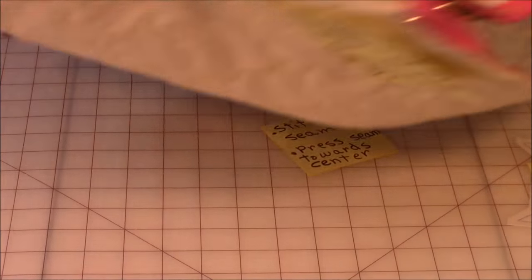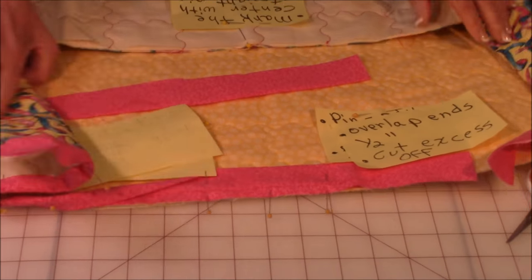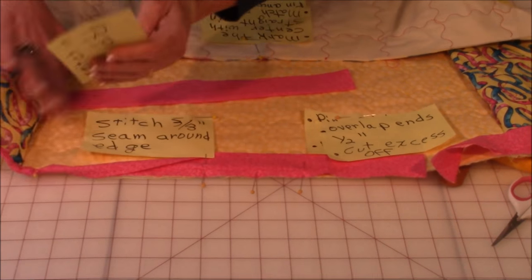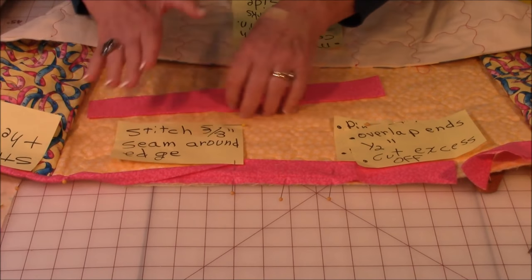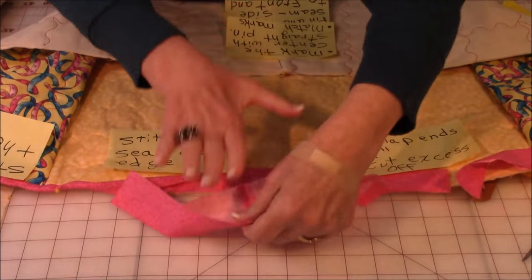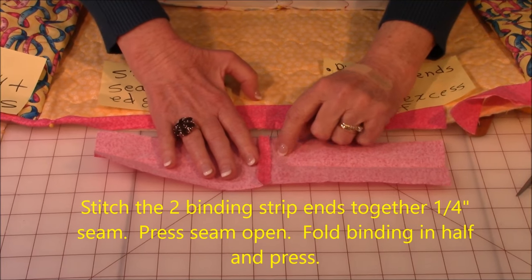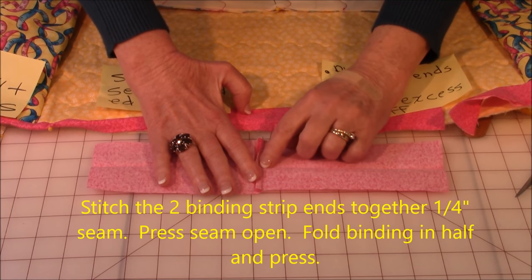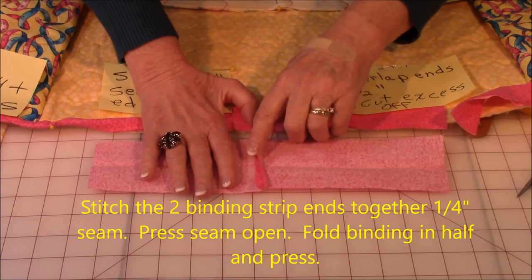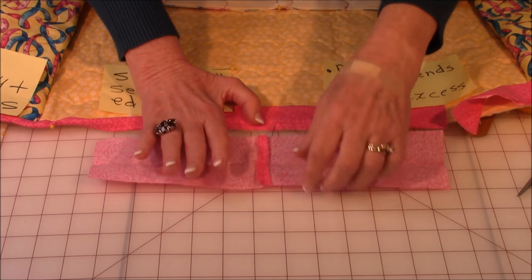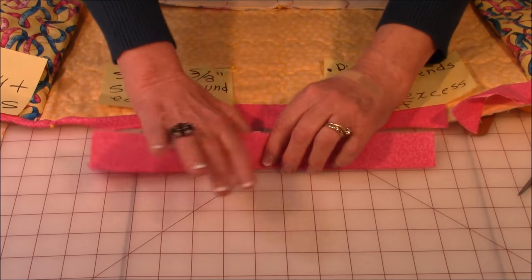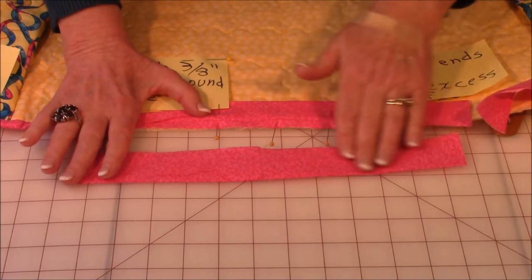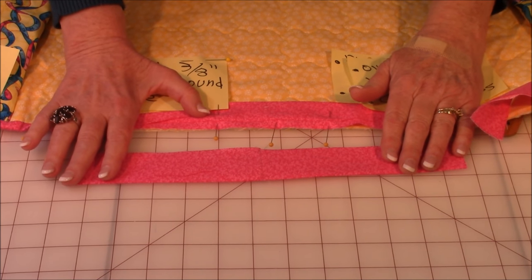Take your two binding strips. And bring the two ends together. Pin and stitch one quarter inch. Then press the seam open. Fold it in half. And press the full length of your strips.